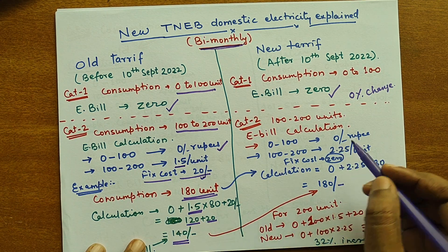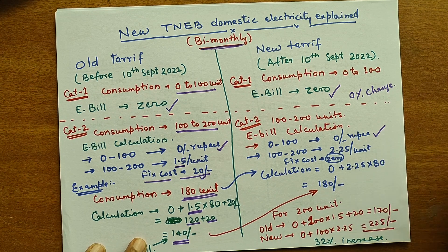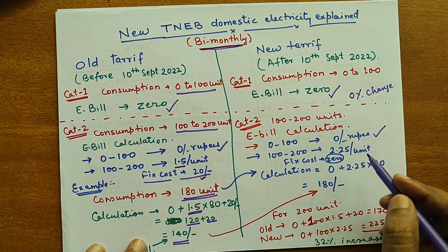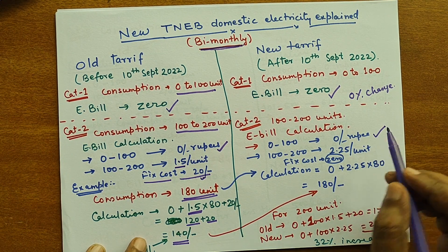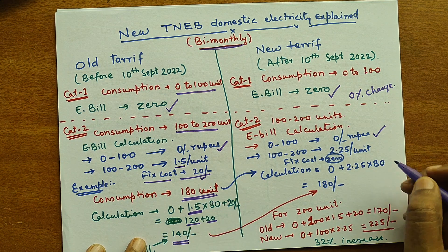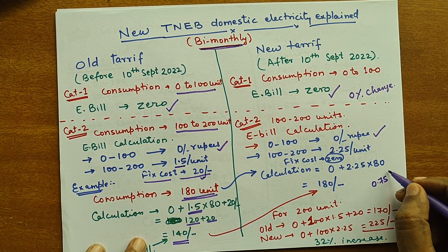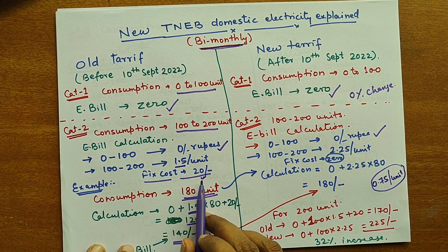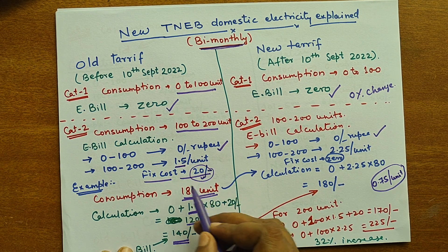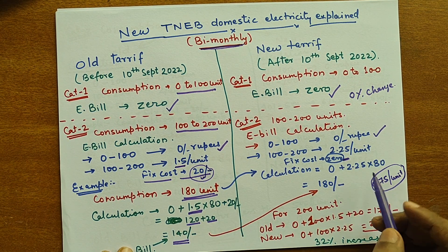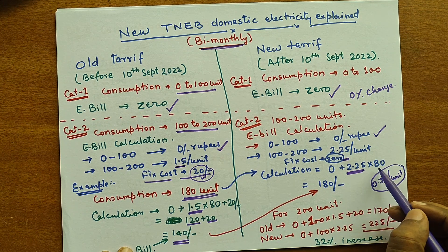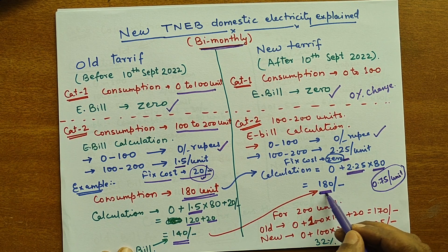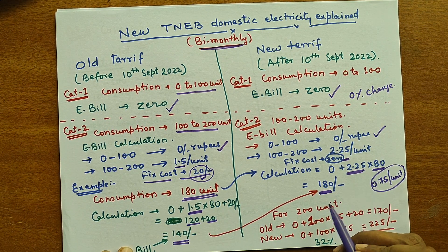In the new tariff, 0 to 100 units is free for everyone. From 100 to 200 units, you need to pay 2.25 rupees per unit — an increase of 0.75 rupees per unit. However, the fixed cost is now removed, so you simply calculate 2.25 multiplied by 80 for 180 unit consumption, which comes to 180 rupees.